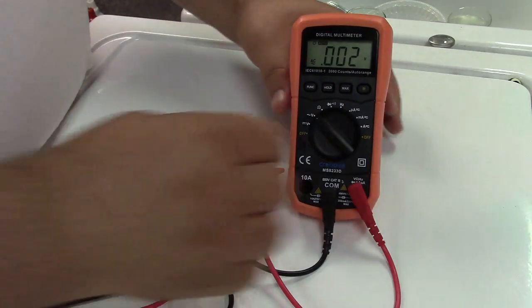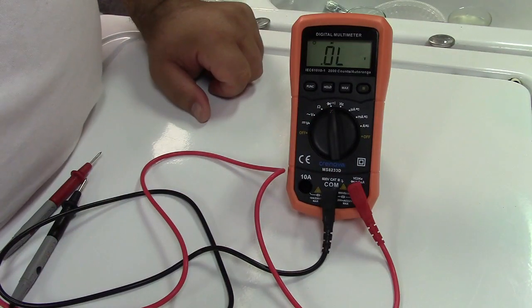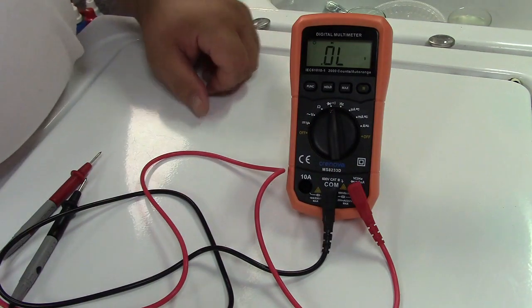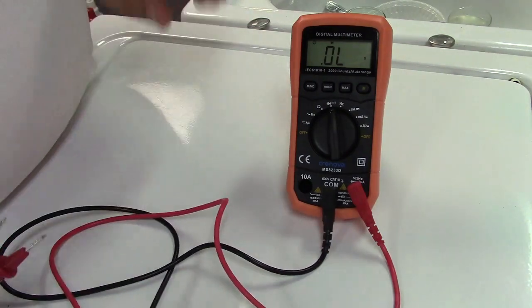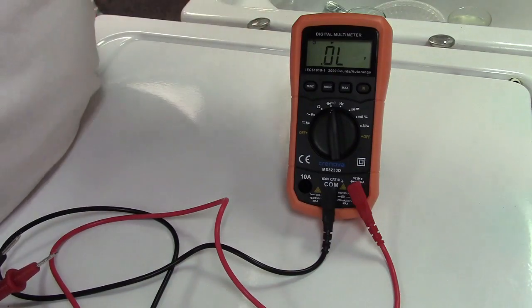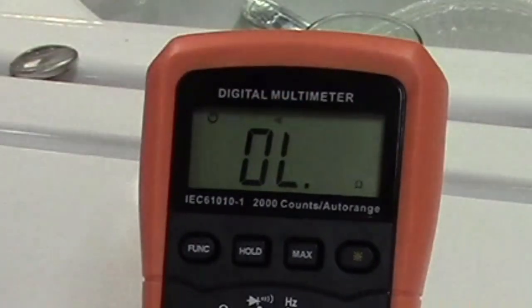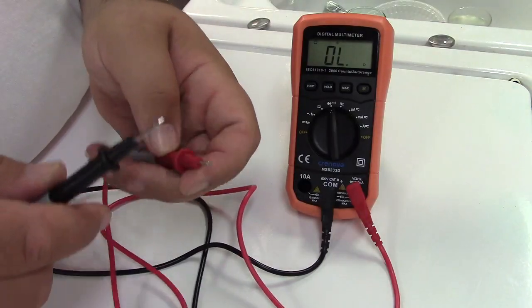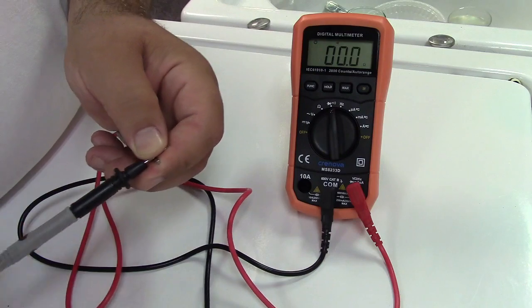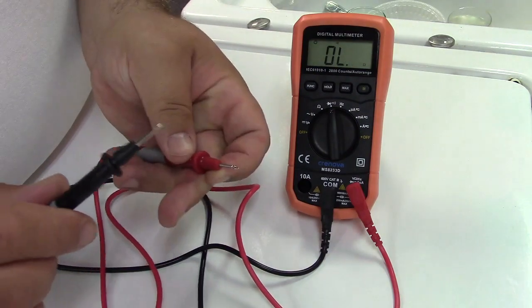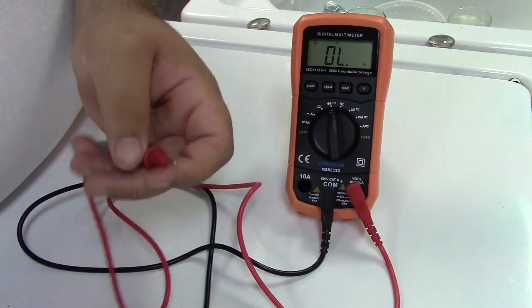And now we can do a continuity check. We'll go over there. Right now it's all set to measure ohms and continuity. It comes up by default with the beeper off, but you can just press the function button and a little indicator shows up for the tone. Now if I touch these probes together, it should beep continuously and we should get a reading very close to zero. So that works.